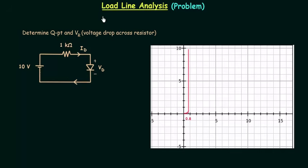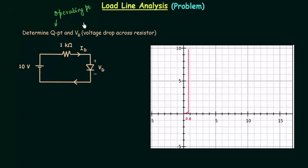In the last lecture we did the load line analysis of a PN junction diode. In this lecture we will solve one numerical problem. We have to determine the Q point, which is the operating point of the diode, and Vr, the voltage drop across the resistor.